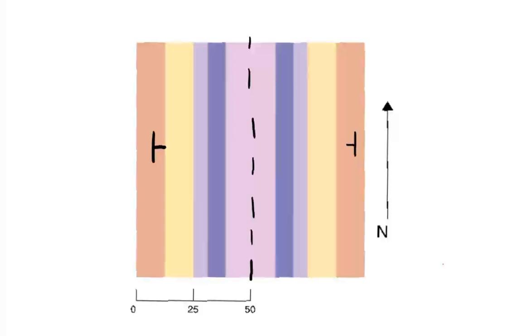So when you can find strike and dip symbols on either side of the fold, you check those out. If the dip symbols are indicating that the limbs are dipping toward the fold axis on either side of the fold, that is a syncline in the subsurface.